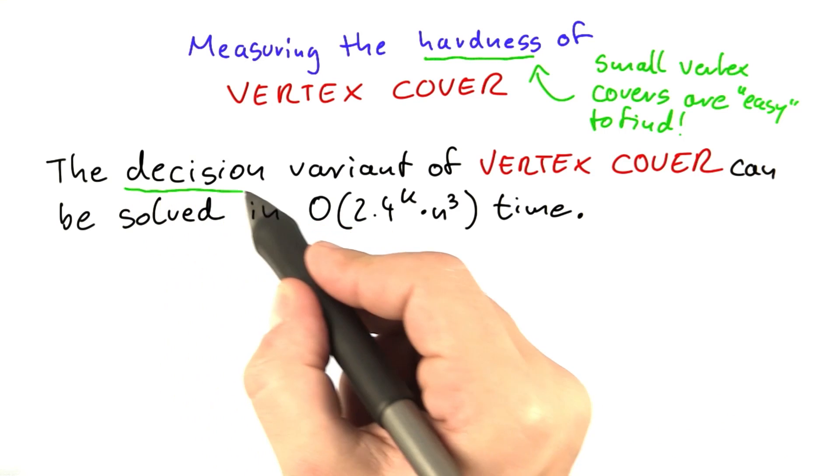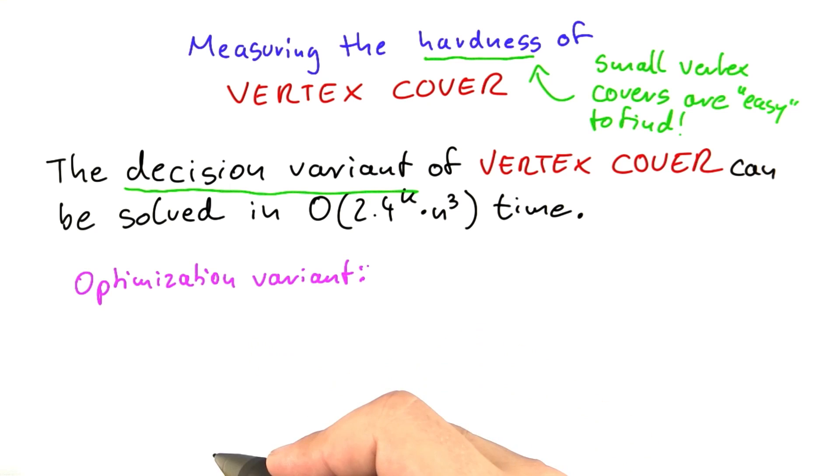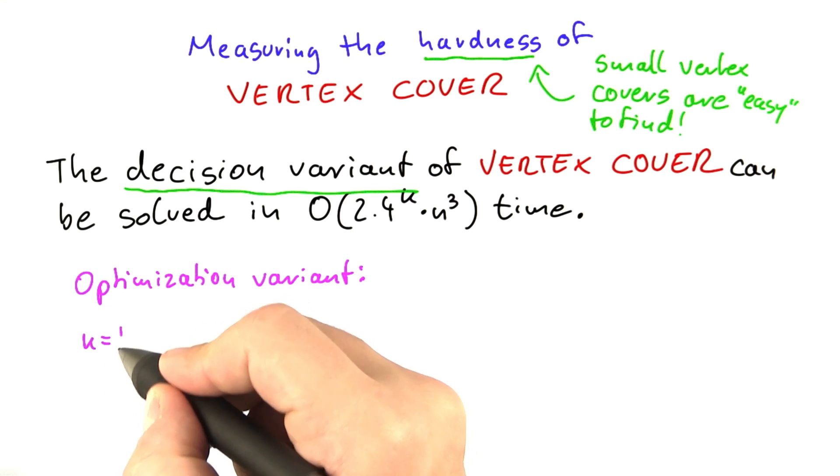So far we have only worked with the decision variant of vertex cover. What about the optimization problem? Actually, that's not that difficult. We just run through all values of k. We will first start out assuming k equals 1.